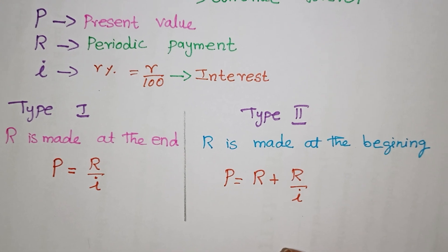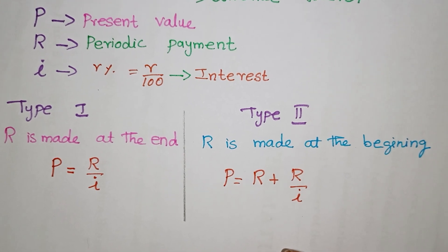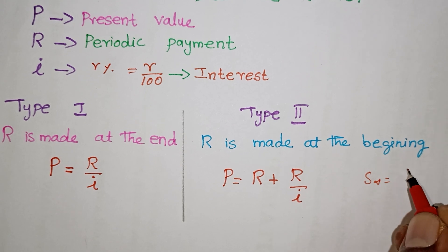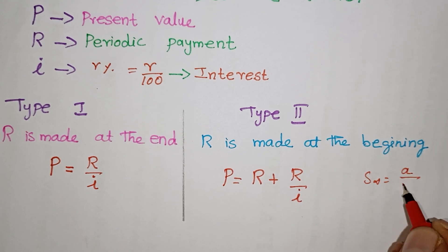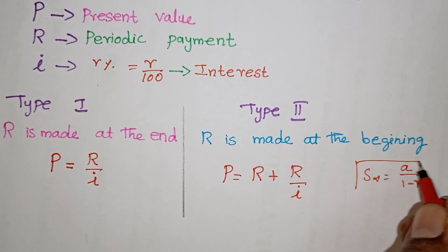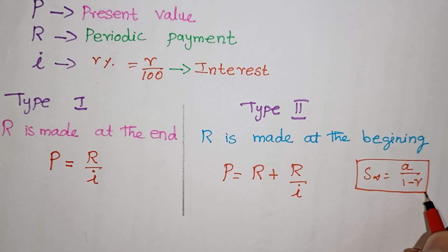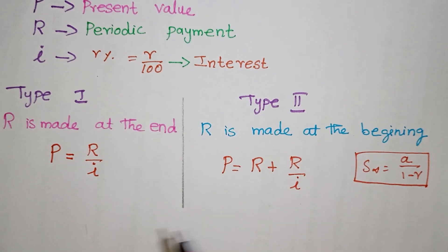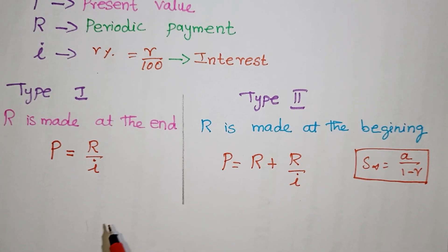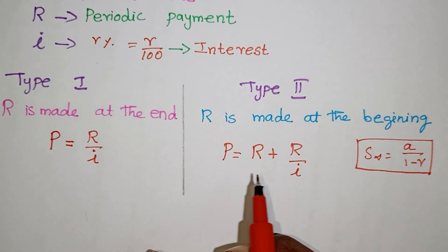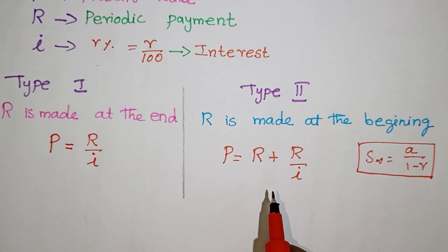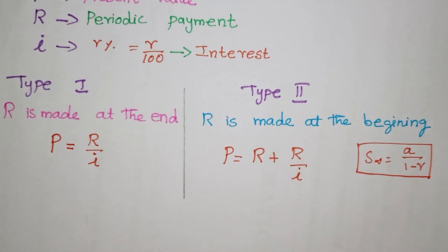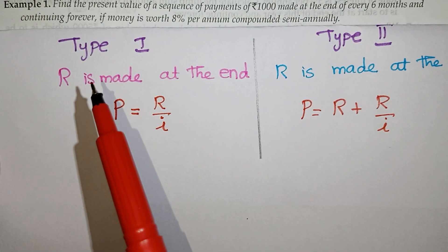There is a simple proof for these formulas. We use geometric progression — specifically the sum to infinity formula, which is: first term divided by (1 minus common ratio). Applying this rule gives us the perpetuity formulas. We will apply the same approach to solve questions involving P, R, or i.